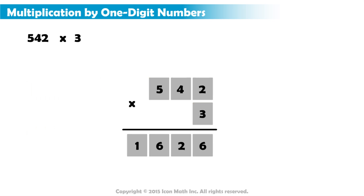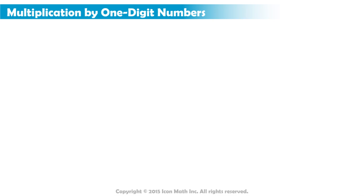And this is our final answer or product: 1,626. Let's take a look at another example. 109 multiplied by 8. Again, we must write the digits in columns from right to left. Remember, we multiply the digit on the bottom by the digits in the top number from right to left.